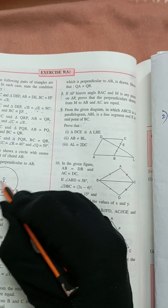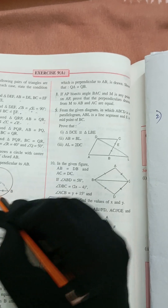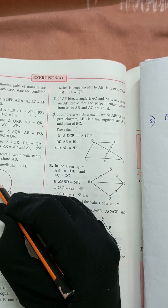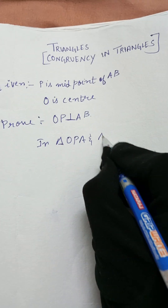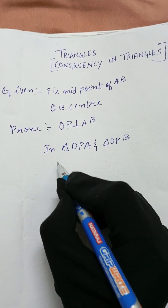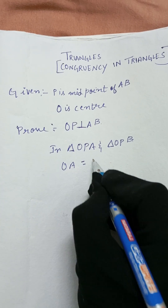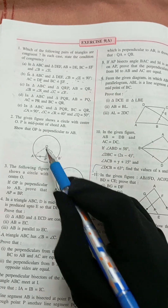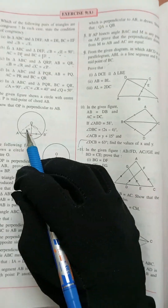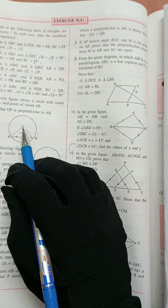In the diagram, we construct two triangles: triangle OAP and triangle OPB. Now, OA is equal to OB — both are radii of the circle.